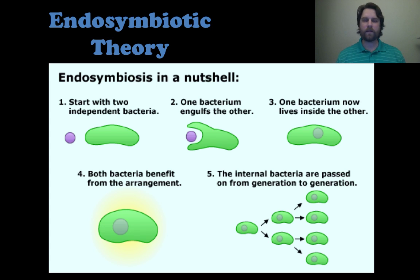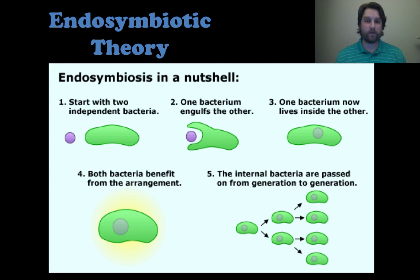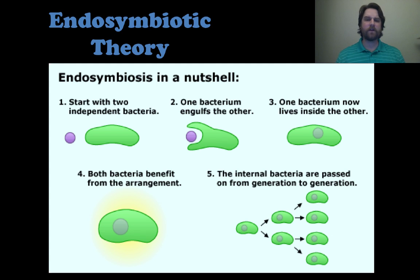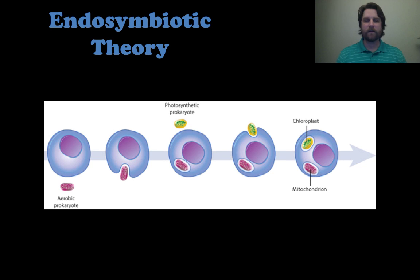Here's a good graphic for what endosymbiosis is in a nutshell. You have two independent bacteria — two single-cell bacterium — and somehow along the way one bacterium engulfs the other. That new bacterium lives inside the other one and they both benefit, so they decide to stay that way. When that green bacteria starts replicating itself, it replicates the purple bacterium that it absorbed. This is what scientists thought of as early organelle development — one bacterium eats another, there's mutual benefit, and now you have a more complex system with one bacterium inside the other performing certain functions.